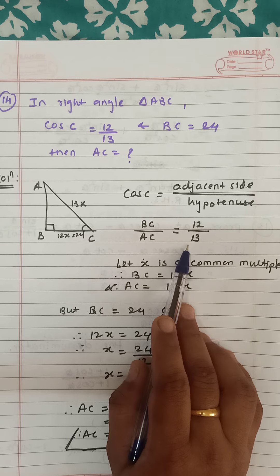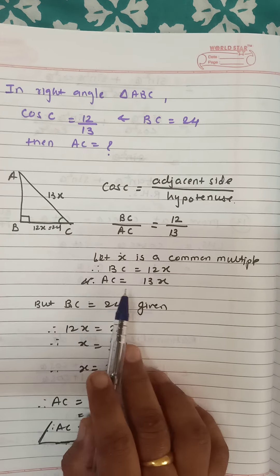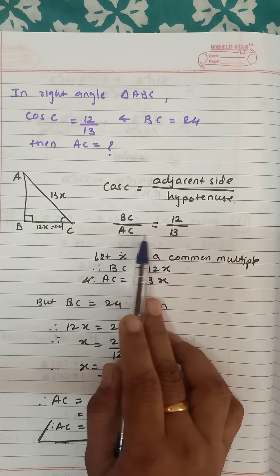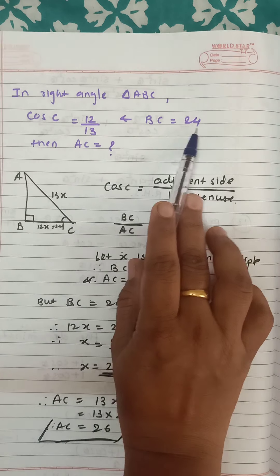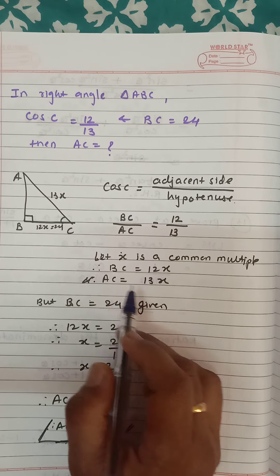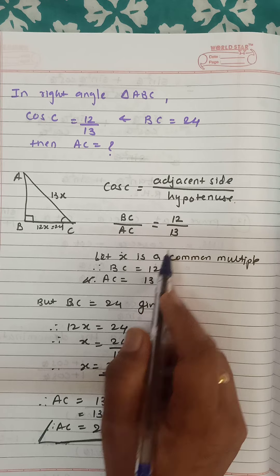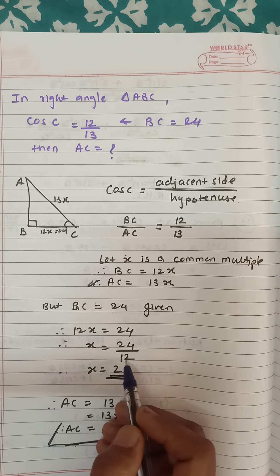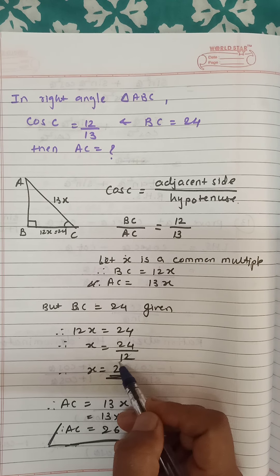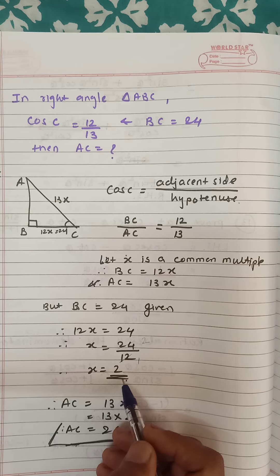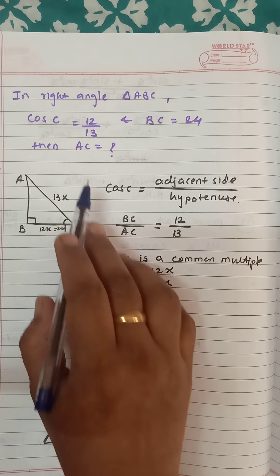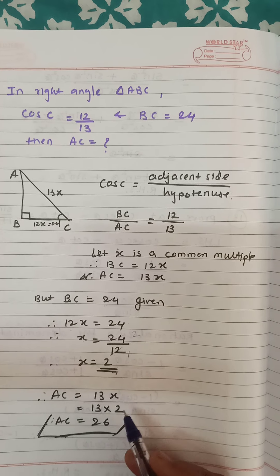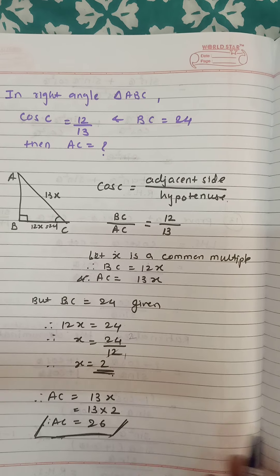It is in ratio, so let x be the common multiple. BC will be 12x and AC will be 13x. But BC is given as 24, so 12x equals 24, meaning x equals 2. We want to find AC, which is 13x. So 13 times 2 equals 26. Therefore AC is 26.